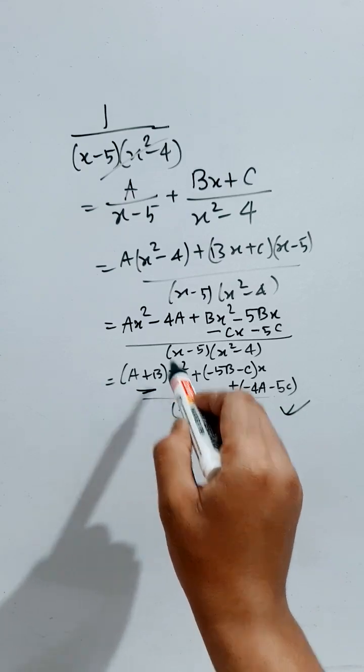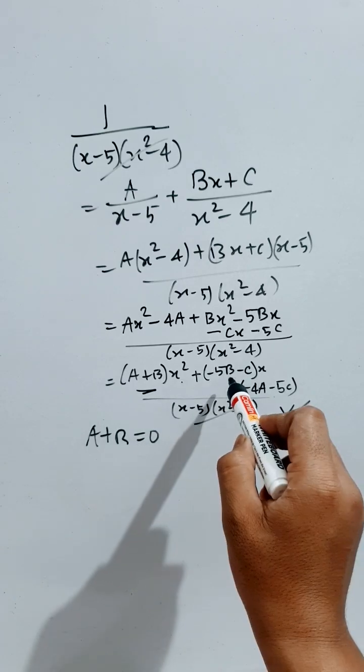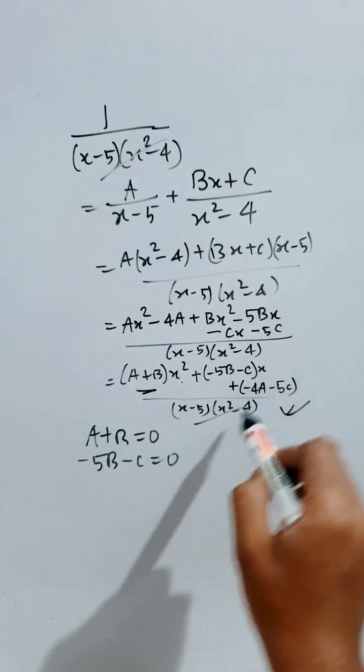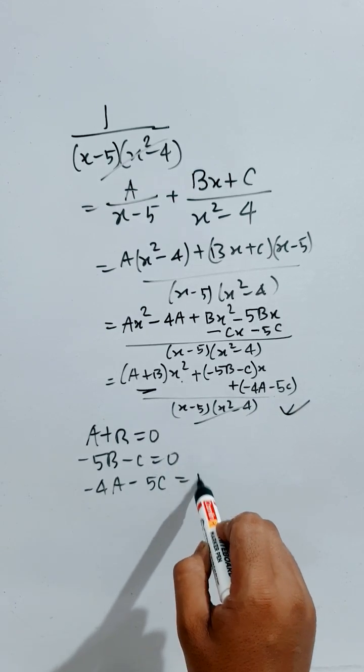So, this is the coefficient of x square and here it is only constant. So, coefficient of x square will be 0. Coefficient of x also will be equals to 0 and the constant term that is minus 4A minus 5C will be equals to 1. Solve this.